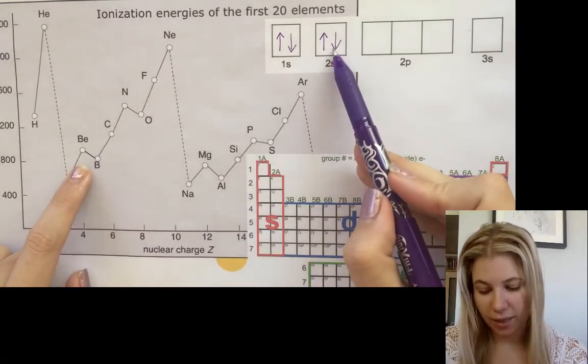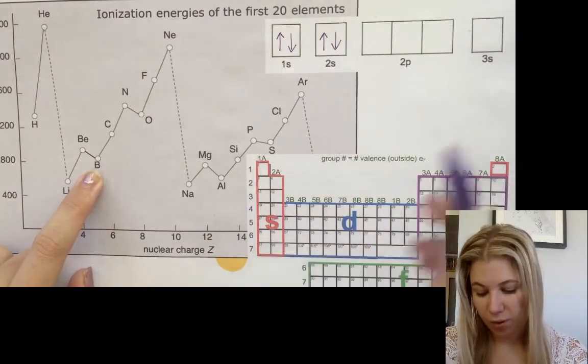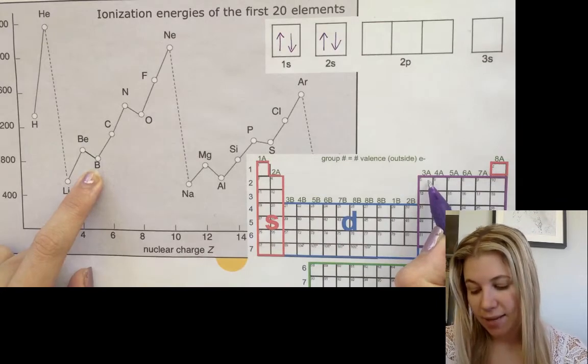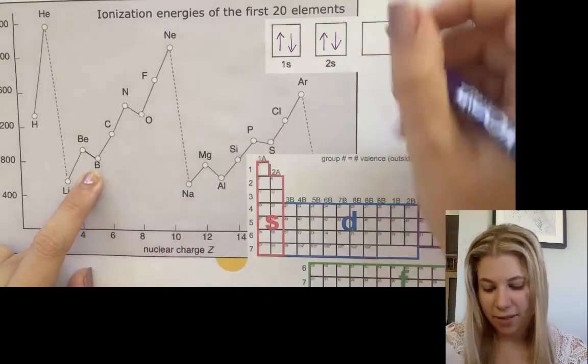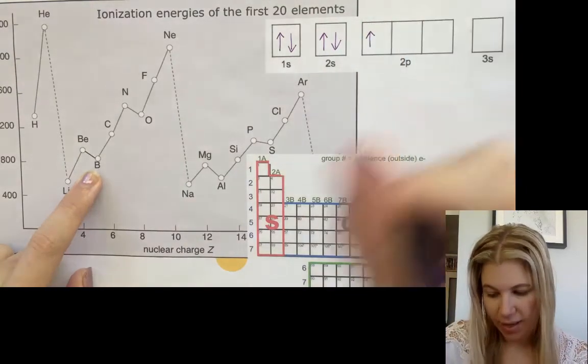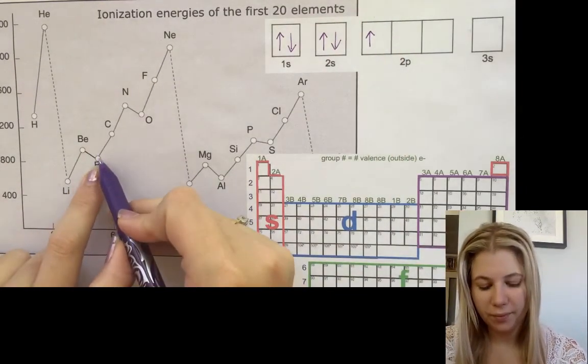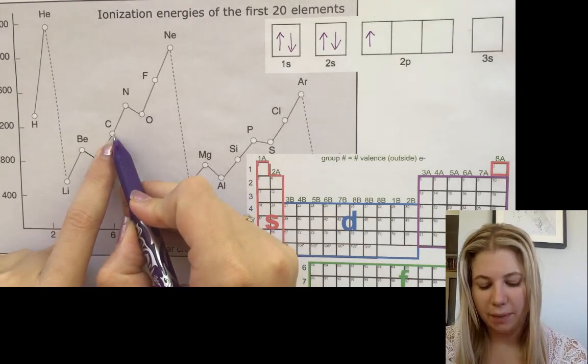So here we've got beryllium. Our next element is boron and we can see here that now we've moved over to the p block and our first electron is going to go into our first p orbital. Now here we go up to carbon.